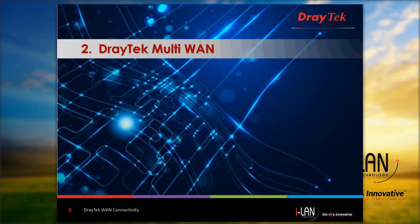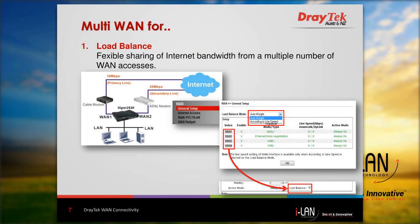In this part we will discuss the multi-WAN functions overview in DrayTek routers. The first function is load balance, which is useful for small to medium-sized business users with multiple WAN accesses who wish to distribute traffic across those accesses. There are two modes: auto-weight, where the router decides WAN speed automatically, and according to line speed, where the user pre-defines or manually sets the WAN connection speed limit.